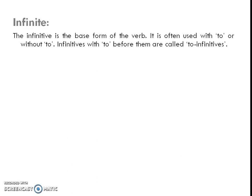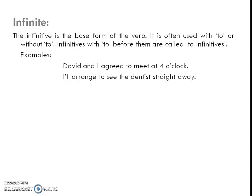The infinitive is the base form of the verb. It is often used with 'to' or without 'to'. Infinitives with 'to' before them are called to-infinitives. Examples: David and I agreed to meet at four o'clock; I'll arrange to see the dentist straight away. So 'to meet' and 'to see' are called to-infinitives because we have used the prefix 'to'.